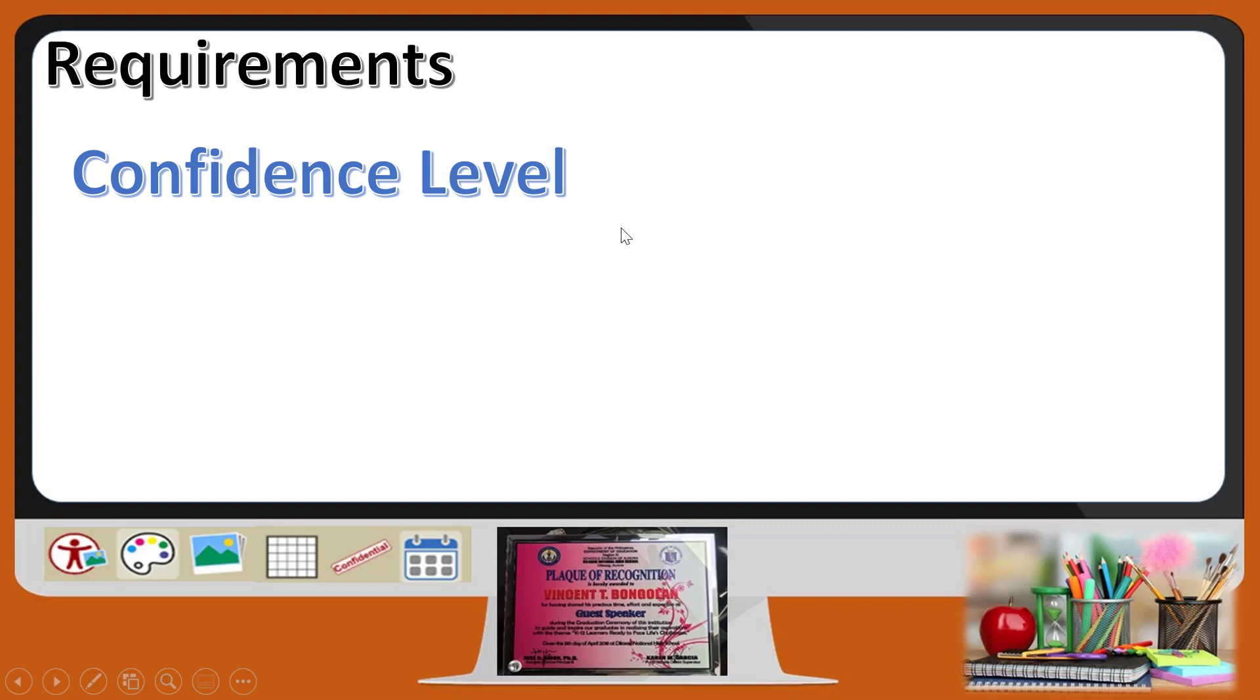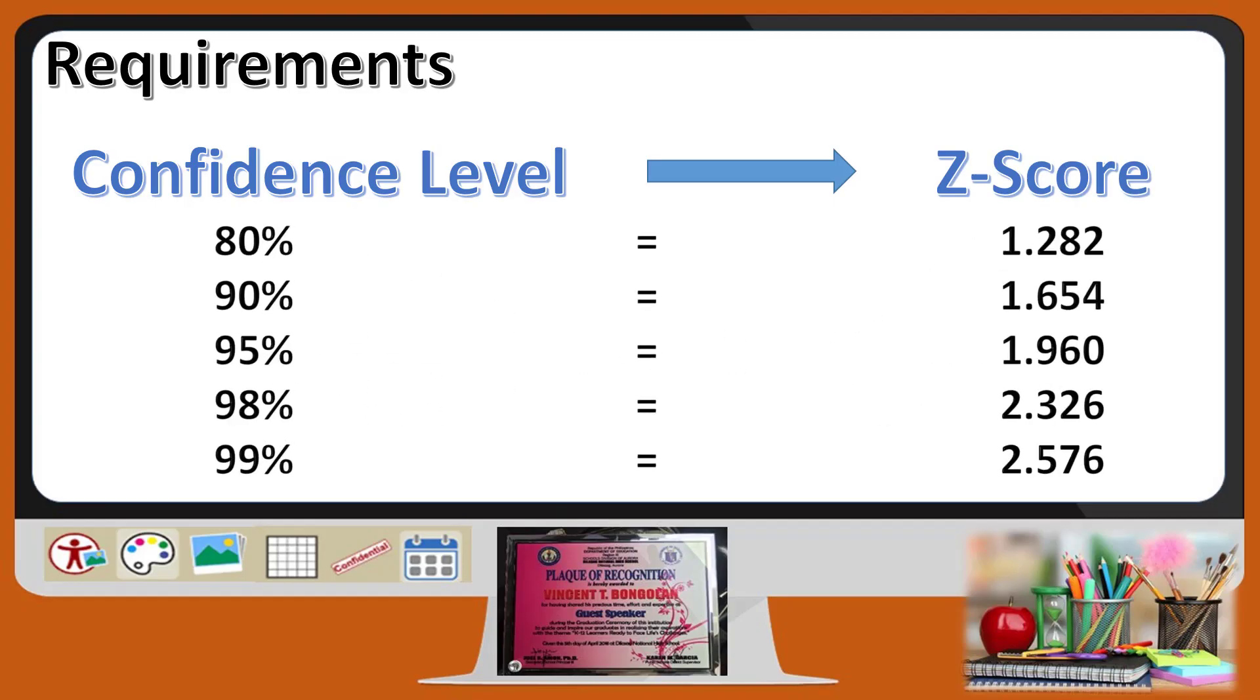So, there are questions where the given data is a confidence level. And you need to get first the corresponding Z-score of this or each of the confidence level. A confidence level of 80% is equivalent to Z-score of 1.282. A confidence level of 90% is equivalent to Z-score of 1.654. A confidence level of 95% is equivalent to 1.960 and so on and so forth. Like I said, given data sometimes are giving you the confidence level. So, you need to get or you need to calculate the Z-score.